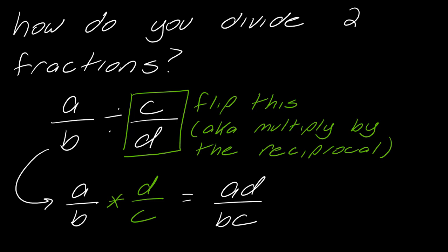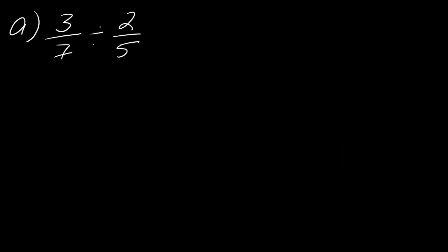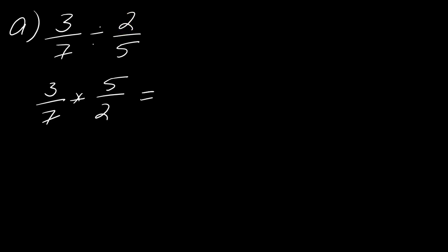Let's give this a try. I've got 3 over 7 divided by 2 over 5. So this will become 3 over 7 times 5 over 2 — I multiply by the reciprocal, flipping the second fraction and multiplying. If I multiply these together, I'm left with 15 over 14.